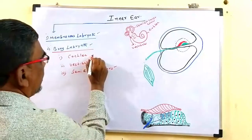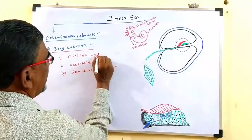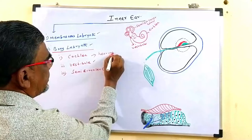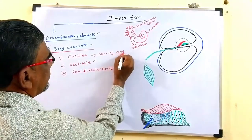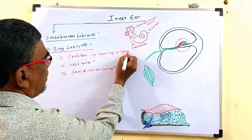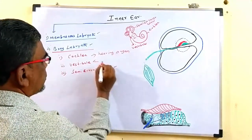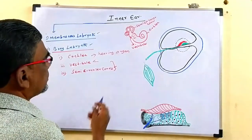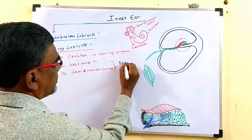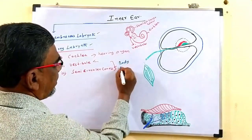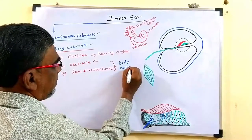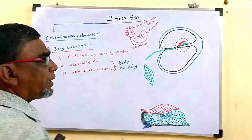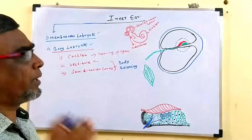The Cochlea is actually the hearing organ. What about the other two structures — vestibule and semi-circular canals? These two perform body balancing, or what you can call equilibrium.